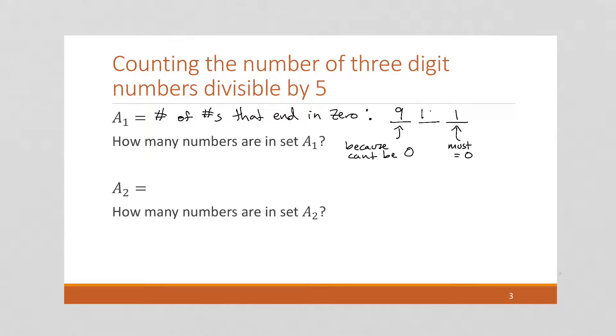But this middle digit could be a 0 or it could be anything else. So we've got 10. And if we multiply this all out, we're going to get that there are 90 ways, 90 different numbers that end in a 0, 90 different three-digit numbers that end in a 0.